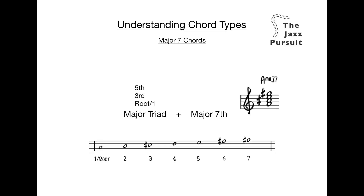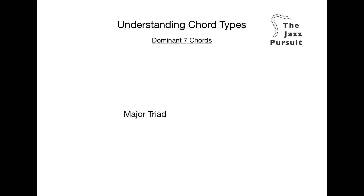Now let's take a look at dominant 7s. A dominant 7th is made by a major triad — the 1, 3, 5 of the major scale — plus a flattened or minor 7th. In this case, minor simply means smaller. Let's work out a C dominant 7th, or as it's more commonly known, a C7 chord.